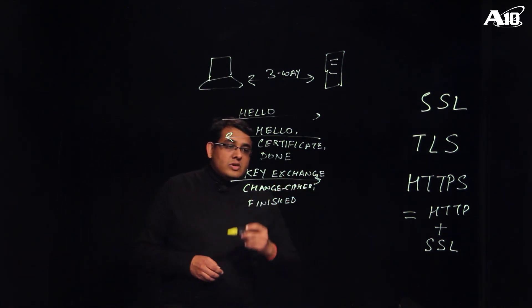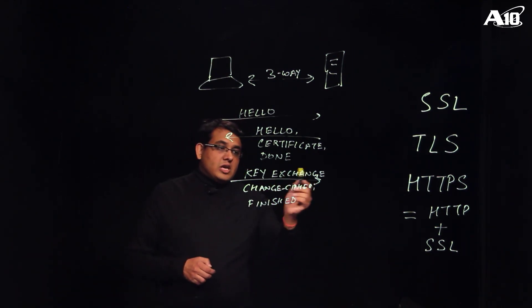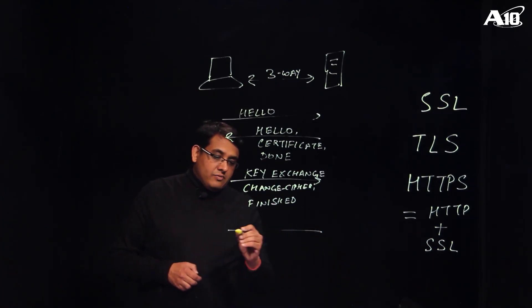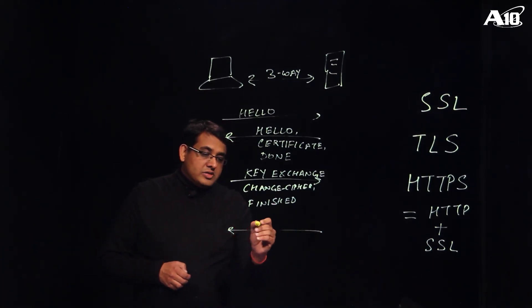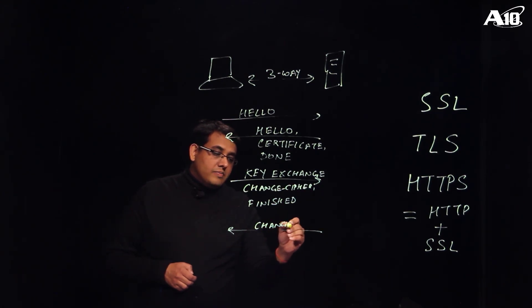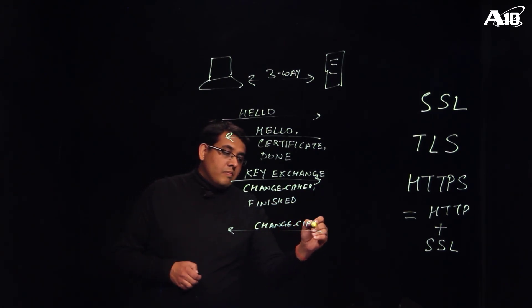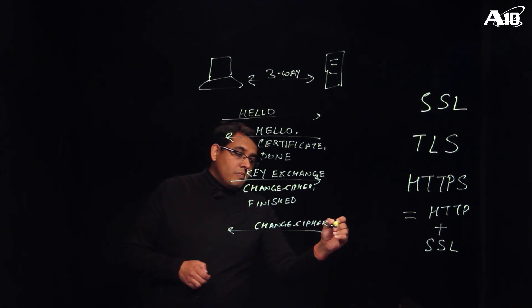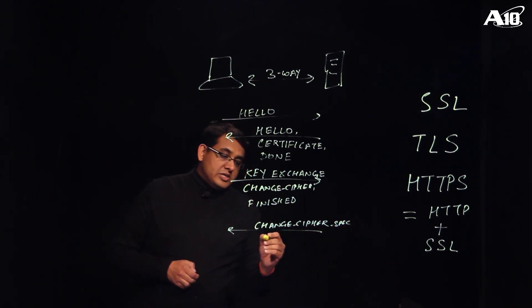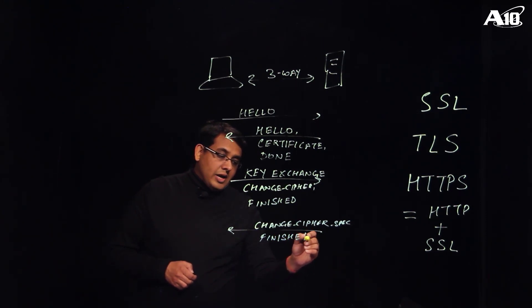The server will obtain the pre-shared key from the key exchange message. And once it has got that, it will send its change cipher spec message back to the client and it will then send its finished message which is the first encrypted message from the server to the client.